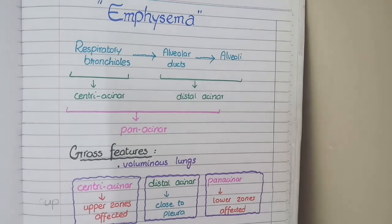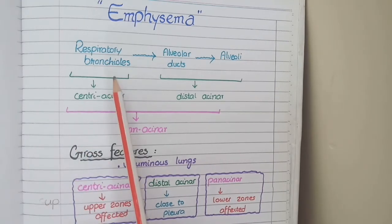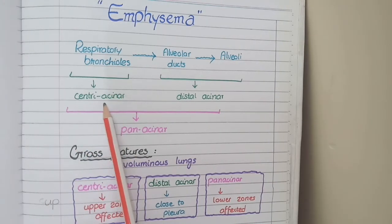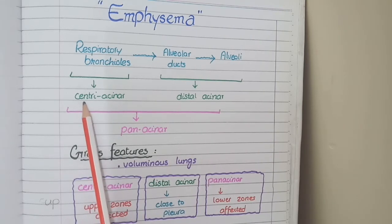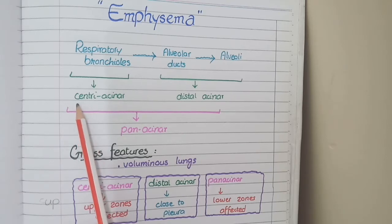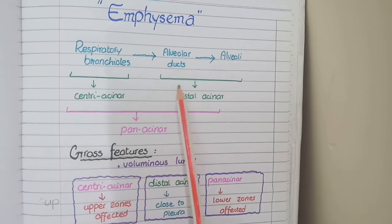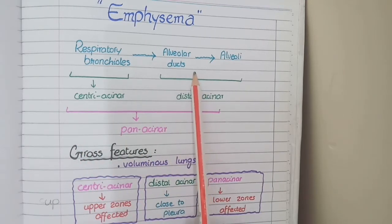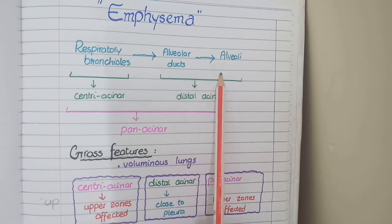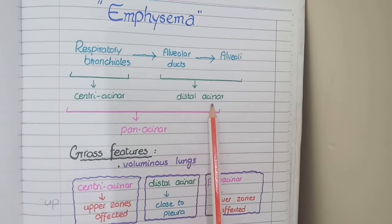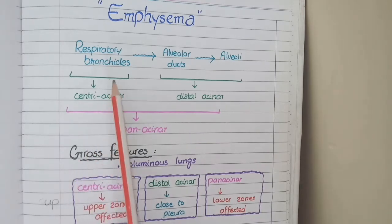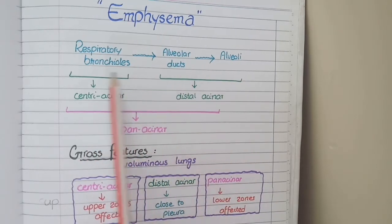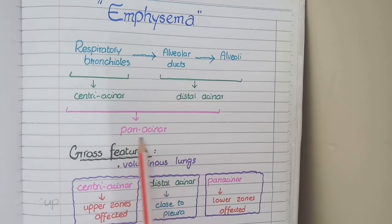If emphysema only involves the respiratory bronchioles, it is called centriacinar emphysema. It is called centriacinar because it affects the region of the acinus that is close towards the hilum of the lungs. If emphysema affects the distal part of the acinus comprising of alveolar ducts and alveoli, it is called distal acinar emphysema. And if emphysema affects all regions of the acinus, it is called panacinar emphysema.